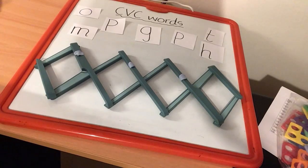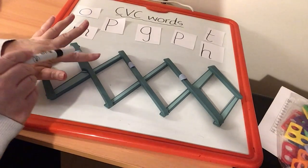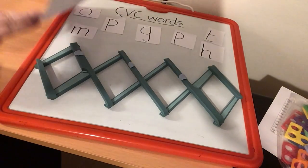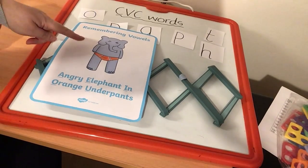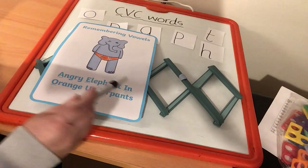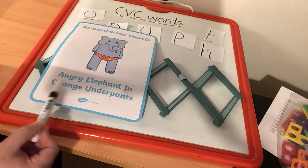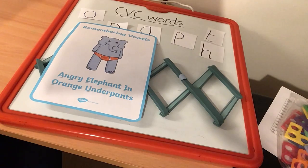Can you remember how many vowels there are in the alphabet? There are five. We have A, E, I, O and U. And can you remember that way that I told you about last week to help you remember the vowels? Our angry elephant in orange underpants. A, E, I, O and U. So every time you try to remember the vowels, you just think about angry elephant in orange underpants. And that will help you to remember.